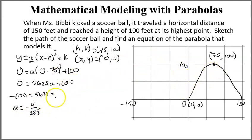And because of the scaling, negative 4 over 225, that's really wide. I know H and K right here. I know A, so I can write my parabola model to be Y equals A times X minus H. So it's going to be X minus 75 squared plus 100.